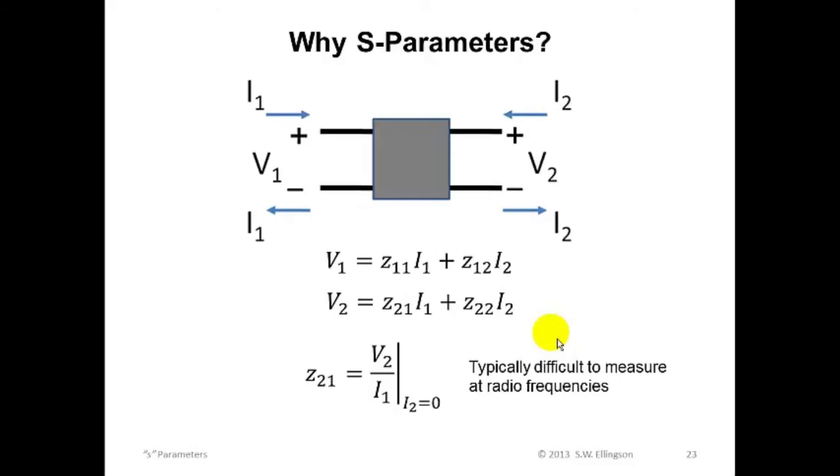Contrast this, just to really appreciate this, you want to contrast this to what it would take to do a radio frequency measurement of the Z parameter, Z21, for example. Since Z21 is the ratio of the voltage at port 2 to the current at port 1 when I2 is zero, well, what we're really saying here is that the second port is open circuited. That's what it means to have no current. It's open circuited. So there's two problems with this.